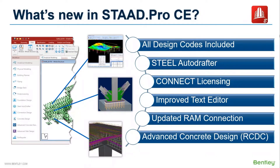Finally, a few new modules have been included like Steel Autoraptor, which can generate drafting drawings directly from your model geometry. And a more powerful Concrete Design module, RCDC, which not only can perform physical entity design but also generate drawing files including the bar bending schedule. Text Editor and Connection Design modules have also been enhanced with updated features.